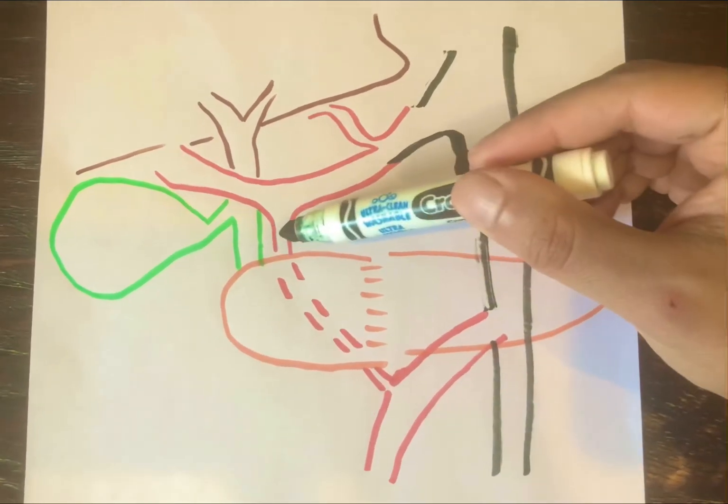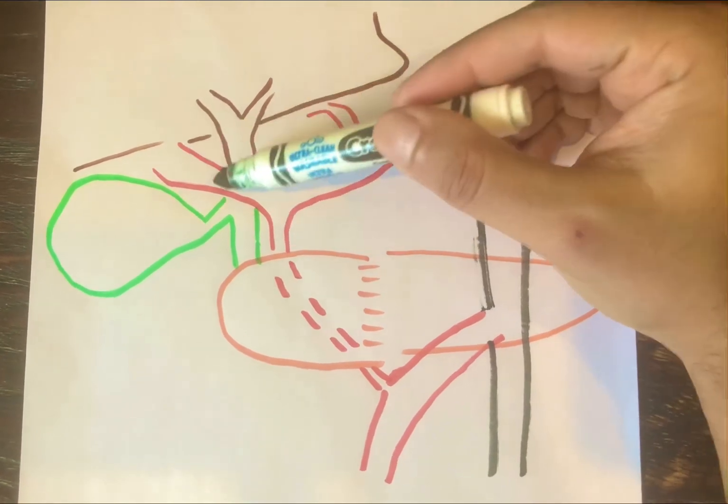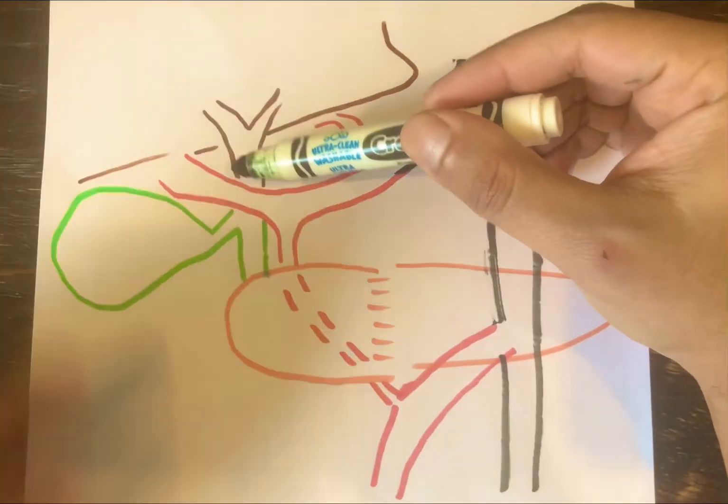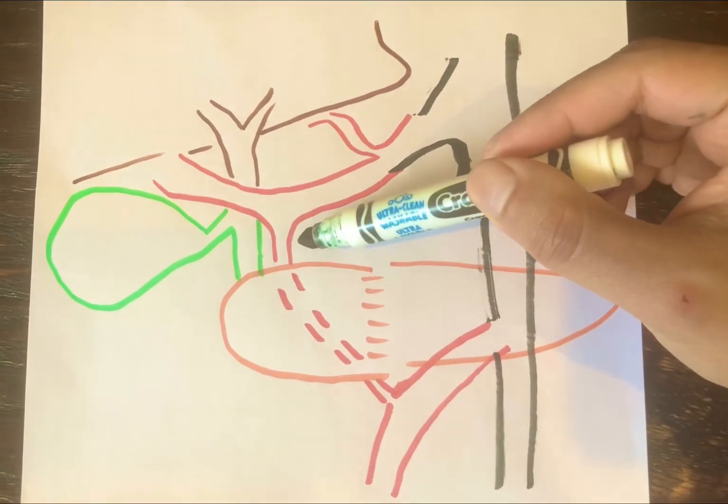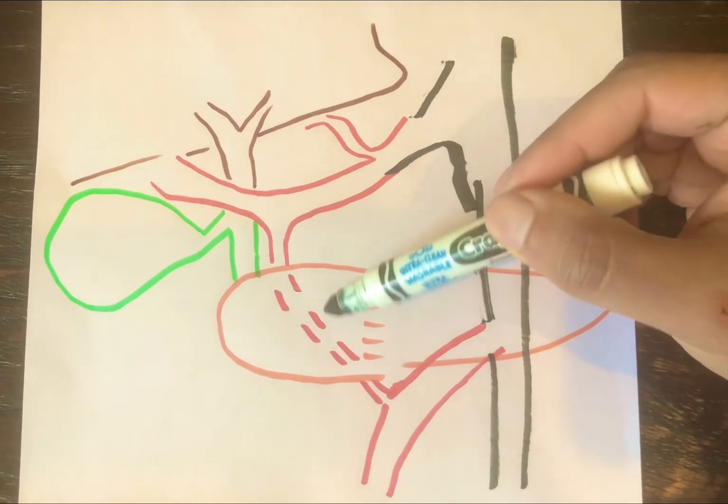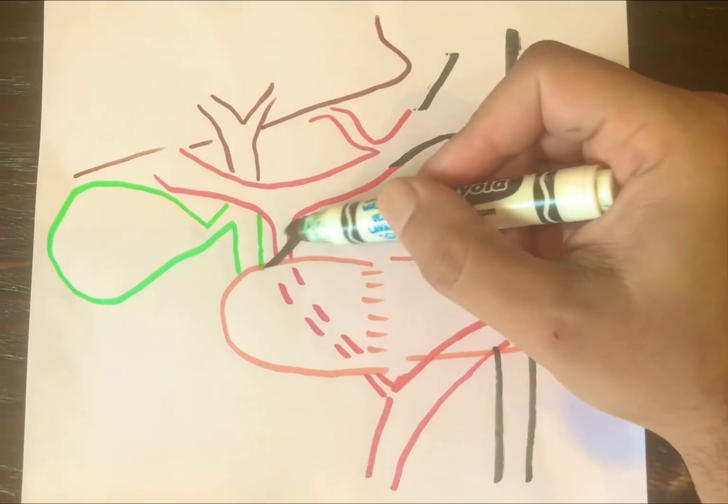So when you tie this off—again, before you tie this off, you feel for a pulse, you feel for a signal, you're not going to get it because this is not the GDA. This is the right hepatic artery. Now, what if you tie it off?